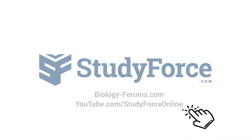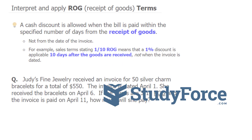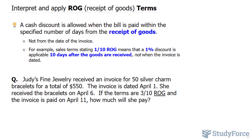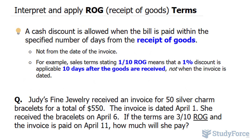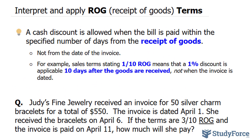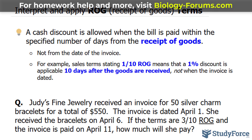In this lesson, I'll show you a quick example on how to interpret and apply receipt of goods terms. Let's begin with some theory. A cash discount is allowed when the bill is paid within the specified number of days from the receipt of goods.